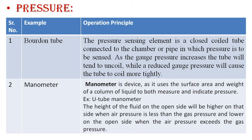The second parameter is pressure. We use different types of sensors to measure pressure. Starting with the Bourdon tube: it senses pressure and gives the desired output in terms of displacement. The pressure-sensing element is a closed coiled tube connected to the chamber in which pressure is to be sensed. As gauge pressure increases, the tube tends to uncoil, and reduced gauge pressure causes the tube to coil more tightly.